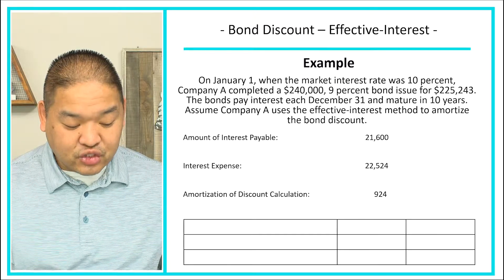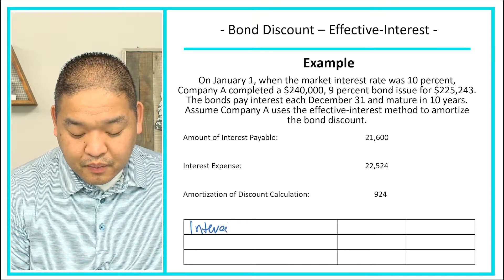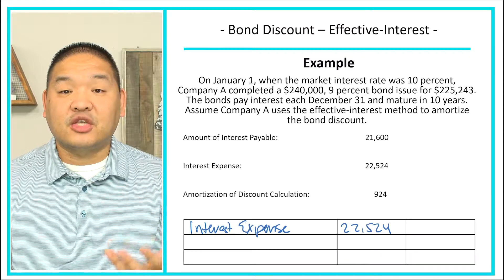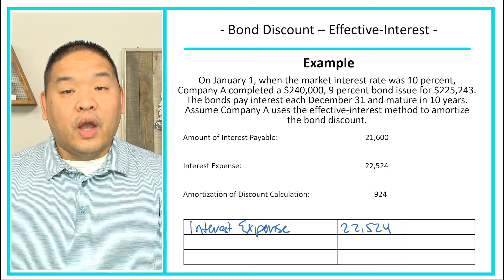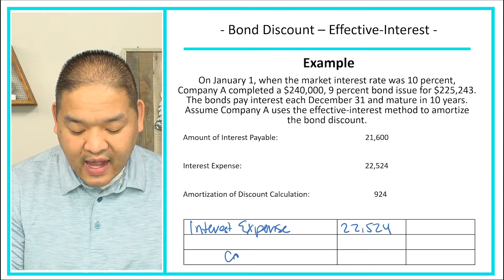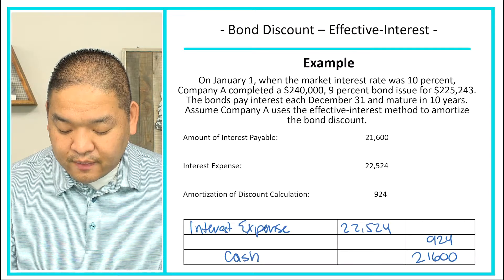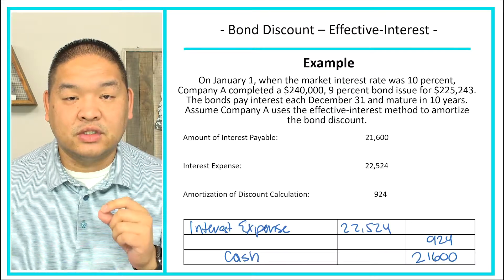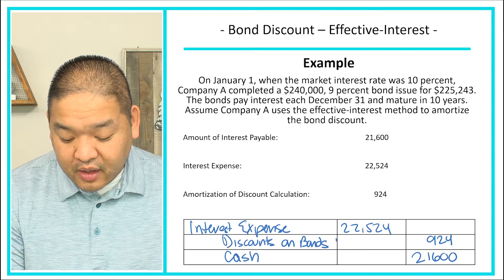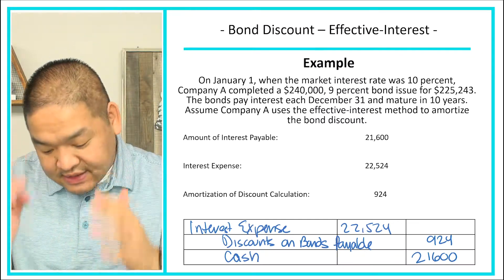For the year-one journal entry: we debit Interest Expense $22,524 — expenses increase with debits. We credit Cash $21,600 for the amount paid to bondholders. The plug is a credit of $924 to Discount on Bonds Payable, which reduces our discount from $14,757 down by $924.